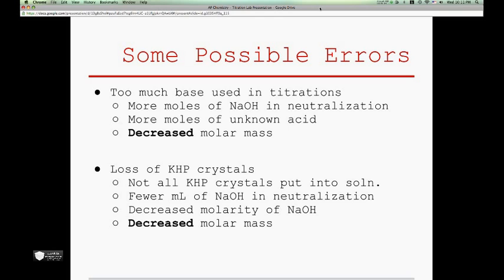Secondly, some KHP crystals were lost after we measured them, and before being dissolved in the water. The volume of NaOH needed to neutralize the KHP thus decreased, causing the calculated molarity of NaOH to be disproportionately small. This decrease in molarity then created a corresponding decrease in the molar mass of tributic acid.